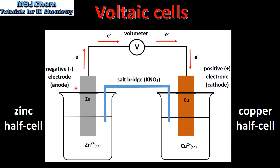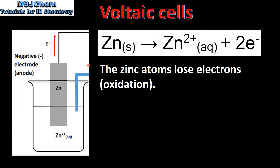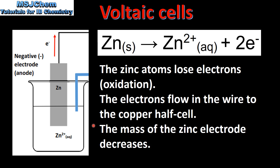The electrons flow in the wire from the negative electrode, which is the anode, to the positive electrode, which is the cathode. At the negative electrode — the anode — the Zinc atoms are oxidized to form Zinc ions and electrons. The electrons then flow in the wire to the Copper half cell. Because the Zinc electrode is undergoing oxidation, the mass of the electrode decreases.